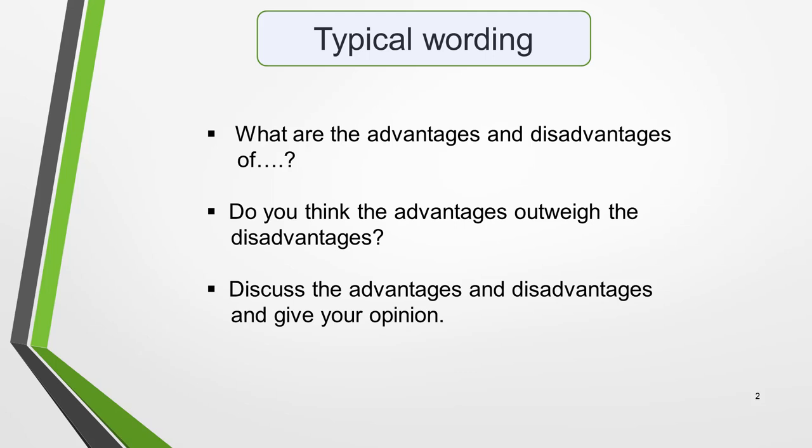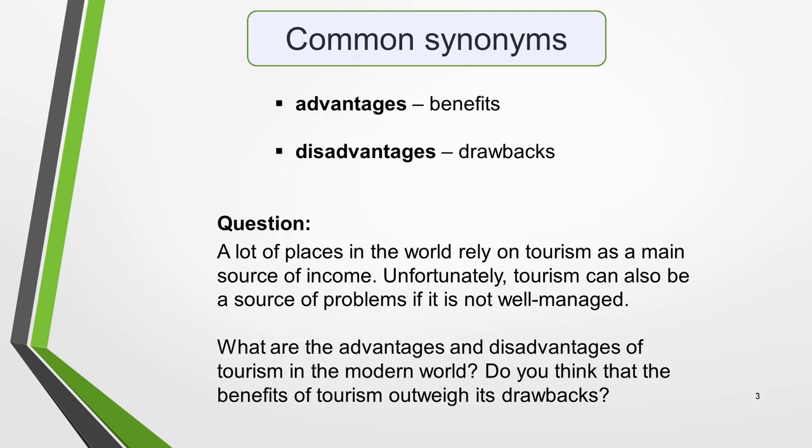Questions for advantages and disadvantages essays can be worded in several different ways. Here's some typical wording that might be used: 'What are the advantages and disadvantages of?', 'Do you think the advantages outweigh the disadvantages?', and 'Discuss the advantages and disadvantages and give your opinion.' It's also common for synonyms of the words advantages and disadvantages to be used, such as benefits or drawbacks, as can be seen in the sample question.